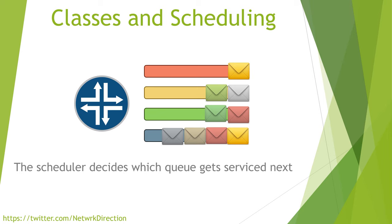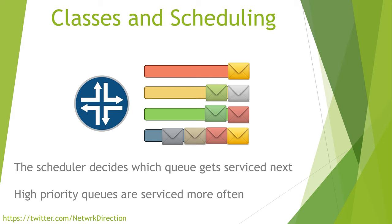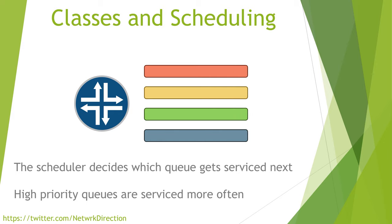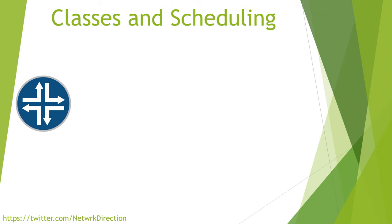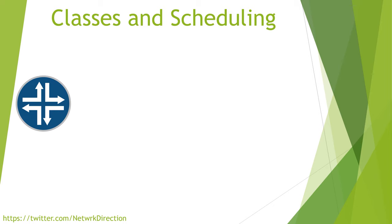The scheduler looks at the priority of each queue and will decide which queue to service next, and that gets to the heart of how QoS prioritizes traffic. The scheduler will service a high priority queue more often than it will service a low priority queue. We can adjust the amount of priority a scheduler gives to each queue. For example, in a four-class model, we might allocate a third of the interface's bandwidth to real-time traffic, a quarter to best effort, and only 5% to scavenger. Best effort gets a large share because it's the default class, meaning a lot of traffic will end up there.